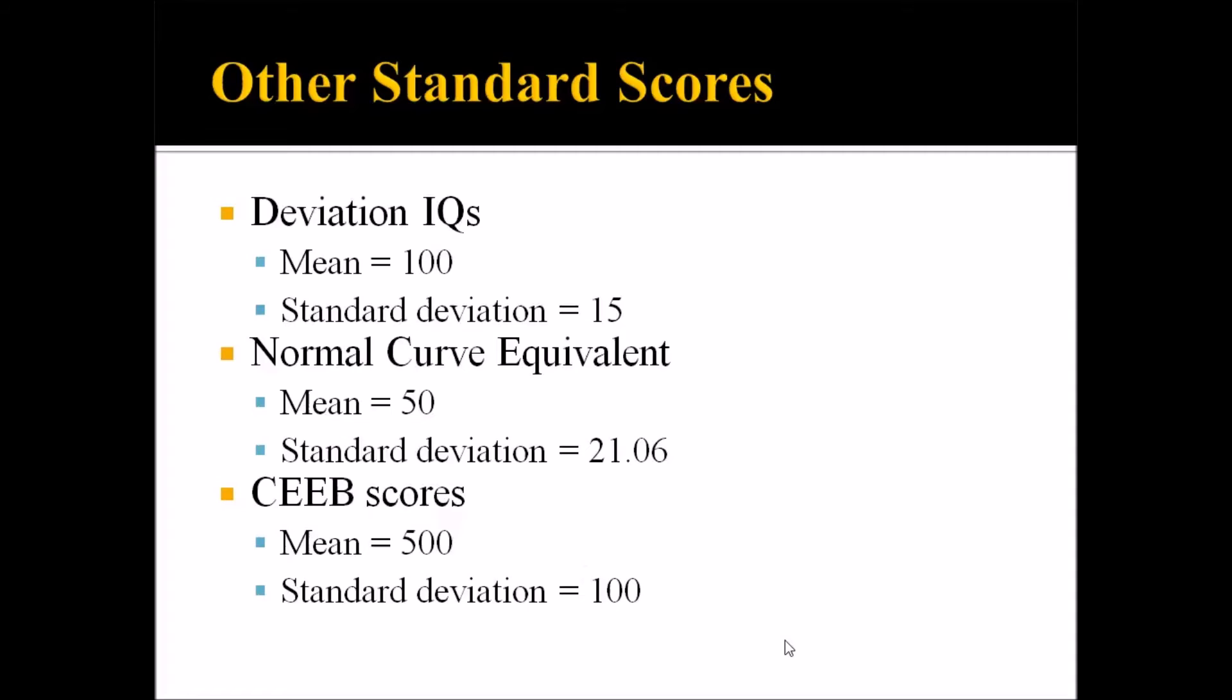So looking at some other standard scores, deviation IQs. The Wechsler scale's IQ has a mean of 100 and a standard deviation of 15 and it is considered the standard. There are other deviation IQs which use a different standard deviation. So it's important to note that deviation IQ, the standard score, is largely considered to have a mean of 100 and a standard deviation of 15. Deviation IQs are widely used in intelligence testing.